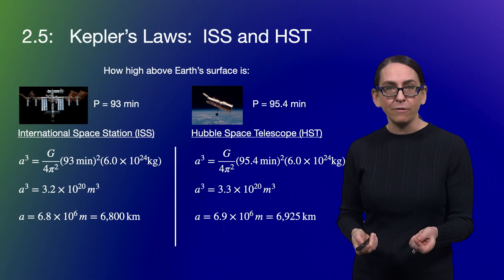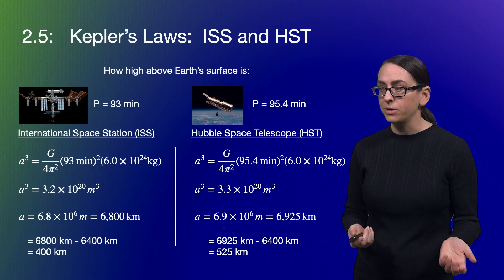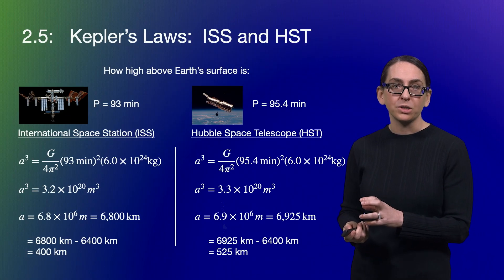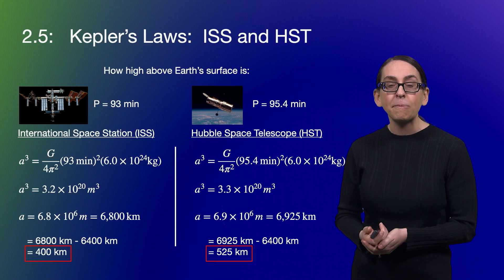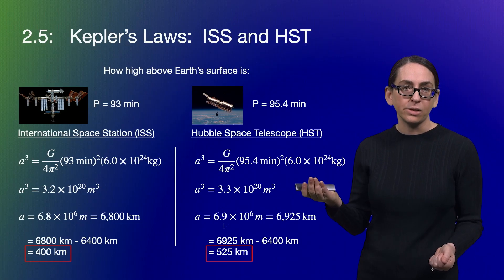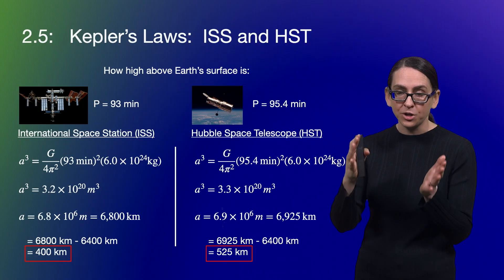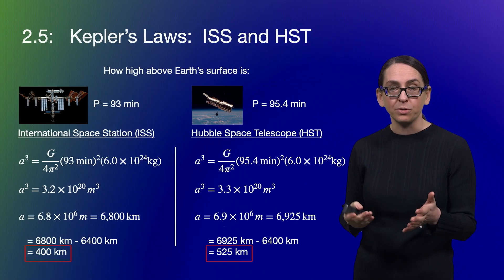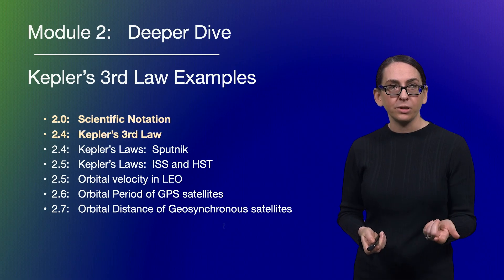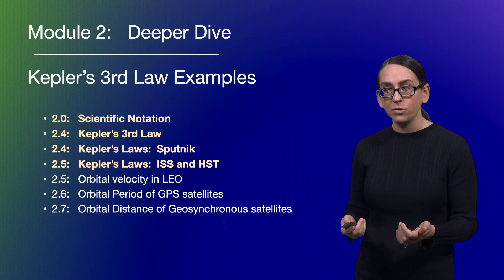Now I subtract off the radius of the Earth. For the International Space Station, I get 400 kilometers. For the Hubble Space Telescope, I get 525 kilometers. You'll note that even though Hubble's period is only a little more than two minutes longer, the difference in orbital height is substantial — about 125 kilometers, nearly 100 miles. So we've gone through Kepler's Third Law and our Sputnik, ISS, and Hubble Space Telescope examples. Let's keep moving on.